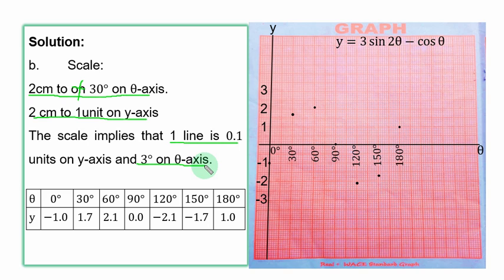2 cm to 1 unit on y axis. From the point of intercession of the two axes, called the origin, to the end of the first box is 1 cm. If you add the next one, it becomes 2 cm, and you give it 1. The next 2 boxes becomes 2 in that order. When you go down, the values become negative. For the theta axis, 2 cm is 30 degrees. From the origin, 0 degrees, you count 1, 2, 30 degrees. The next 2 boxes, 60 degrees, and so on.